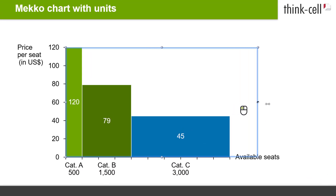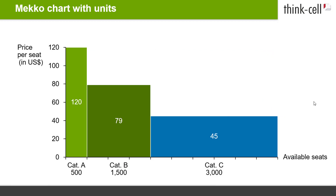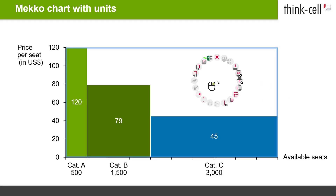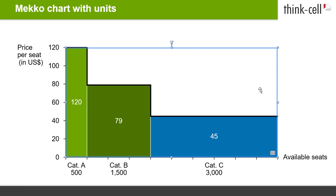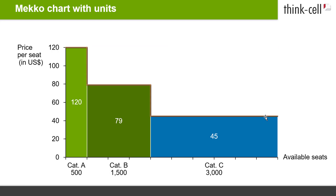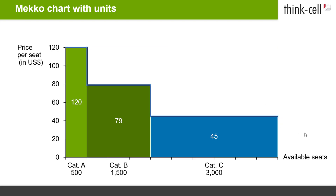Multi-select the category labels and change the label content if you prefer to display both the category name and the number of seats. Resize the chart if necessary. To highlight the outline of your Mecco chart, right-click onto the chart and select Add Ridge from the context menu. To remove the ridge, select it with your mouse and hit the Delete key.